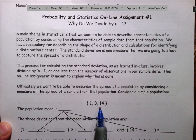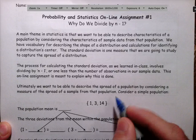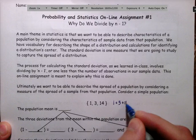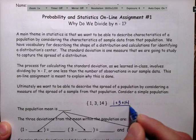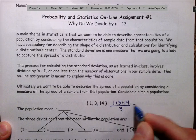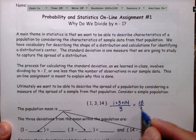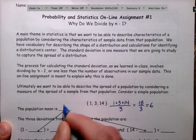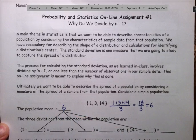So I can find my population mean. I can add the 1 and the 3 and the 14 and I can divide by 3. That's 18 divided by 3. That's 6. So I know the actual population mean is 6.